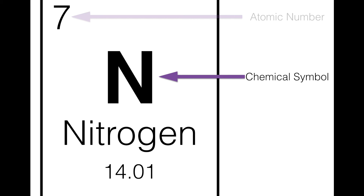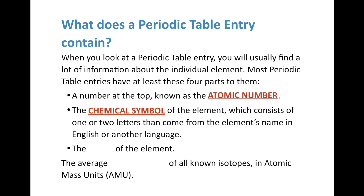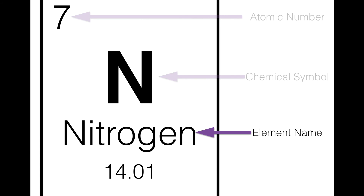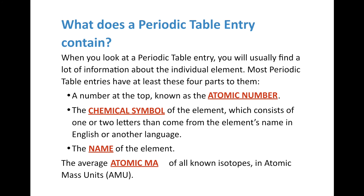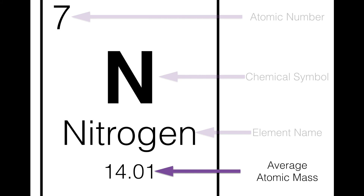So N is the chemical symbol of nitrogen. Seven is the atomic number, and N is its chemical symbol. After that is, of course, the name — that's the name of the element, usually in English. The atomic number of seven with a chemical symbol of N has the element name of nitrogen. Finally, at the bottom, we have the average atomic mass of all known isotopes in atomic mass units. An isotope is an atom with a different number of neutrons and protons. The average atomic mass of all known isotopes of nitrogen is 14.01, meaning most have seven protons and seven neutrons.